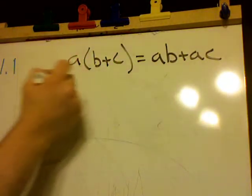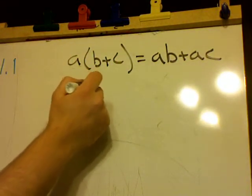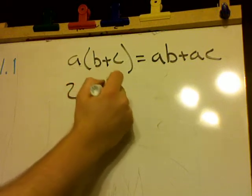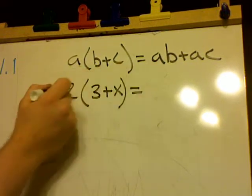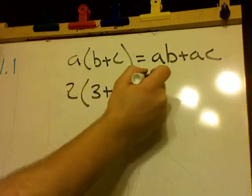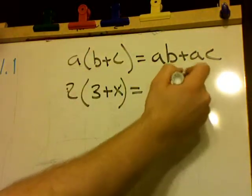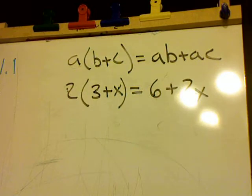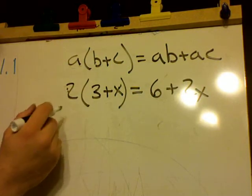Okay, so basically, if I had 2 times 3 plus X, that would be 2 times 3, which is 6, plus 2 times X, which is 2X. Now where this gets tricky...